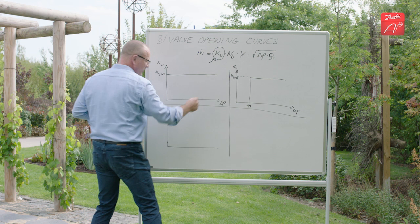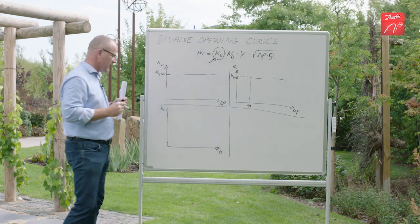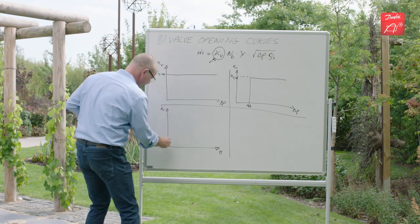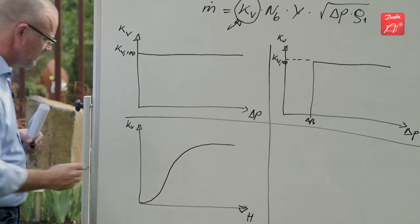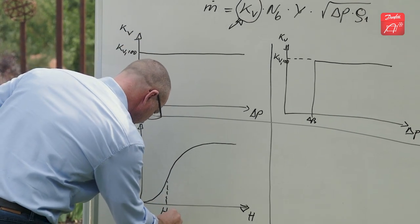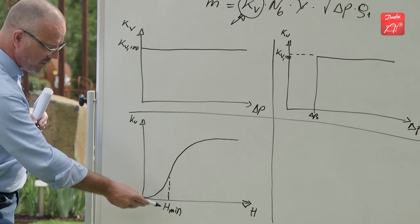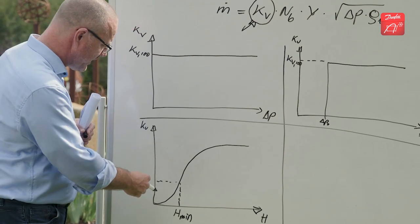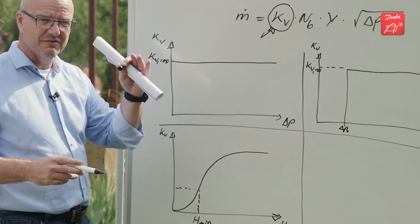So instead of pressure drop across the valve, we will here write the valve travel H. So that is how much the valve is open. The opening characteristic of this valve looks more or less like this. We define a minimum opening below which we don't recommend the valve to be operated. And this is because if you go below the minimum opening, there is a chance of valve fluttering.